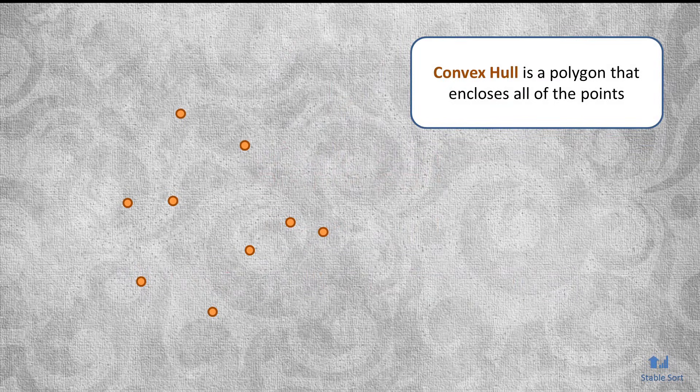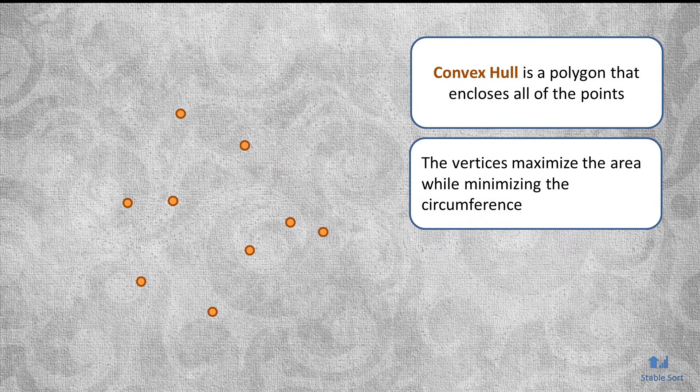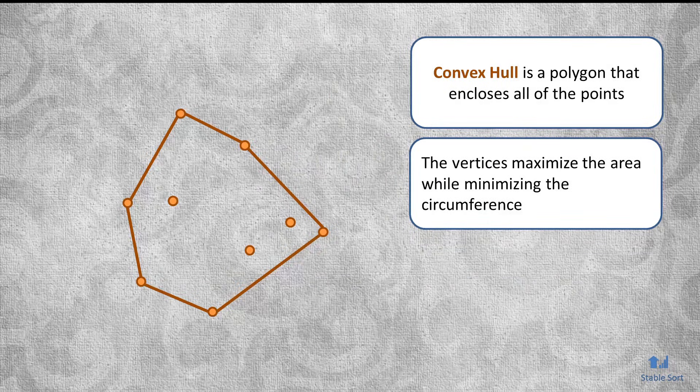Given a set of points on a two-dimensional plane, a convex hull is a geometric object, a polygon, that encloses all of those points. The vertices of this polygon maximize the area while minimizing the circumference. Here is the convex hull of this particular set of points.